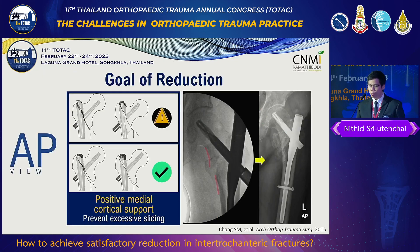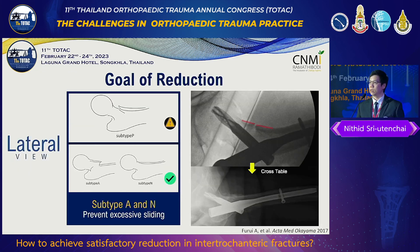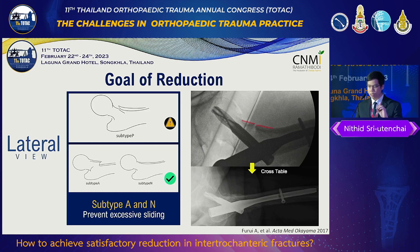In AP view, we use a positive medial cortical support to prevent excessive sliding. And in lateral view, we avoid the anterior cortex of the proximal fragment getting inside the distal fragment, which is called a type P reduction.